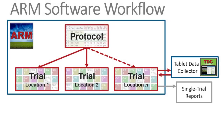ARM generates a variety of single trial reports. These include labels and signs, spray and seeding plans, tour reports, and assessment analysis with treatment comparisons.